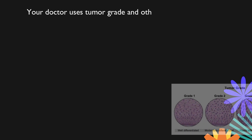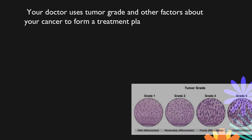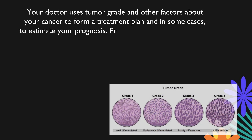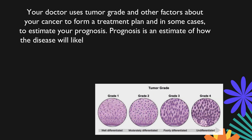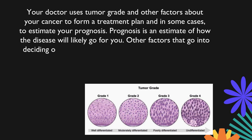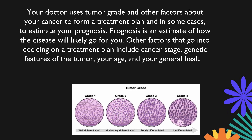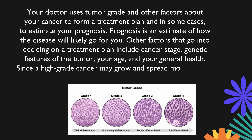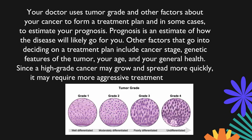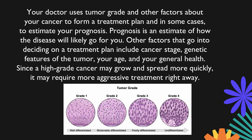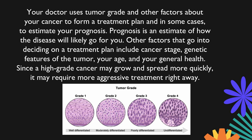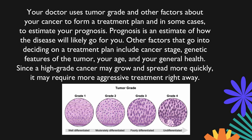Your doctor uses tumor grade and other factors about your cancer to form a treatment plan and, in some cases, to estimate your prognosis. Prognosis is an estimate of how the disease will likely go for you.